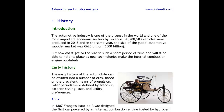So let's very briefly take a look at the history of the automotive industry. It's obviously one of the biggest in the world and in terms of revenue one of the most important economic sectors. 19,780,583 vehicles were produced in 2015, and in that same year the size of the global automotive supply market was 620 billion euros — so it's a massive, very important industry.